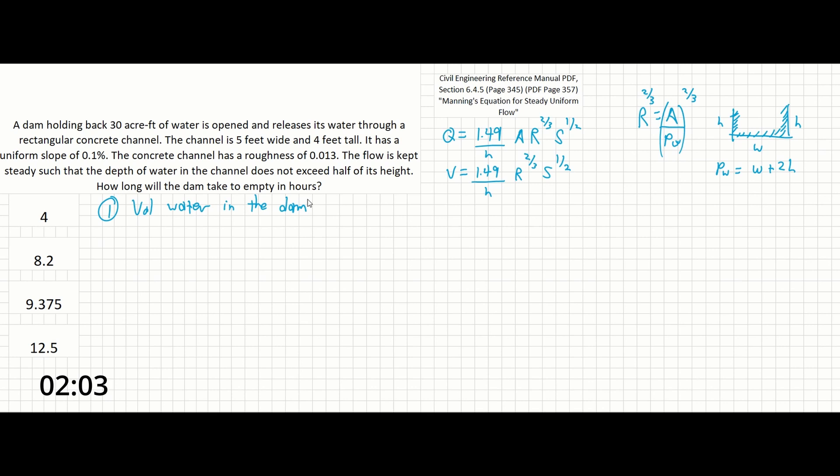So 30 acre-feet times 43,560 feet squared per acre. Acre-feet is a volume. The acreage is the square footage, and then the depth is the foot. So multiplying by the conversion, which you can either have memorized or pull out of the reference manual, gives you 1,306,800 cubic feet.